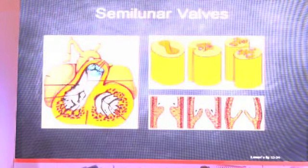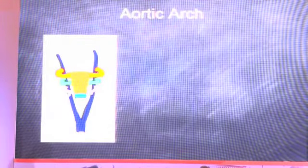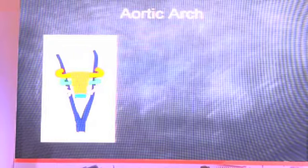The semilunar valves are formed by the cardiac neural crest cells at the time of septation. Regarding development of the aortic arch, there are six arches. The first and second arches never fully develop and disappear by the second week. The third, fourth, and sixth arches actually form the aortic system.